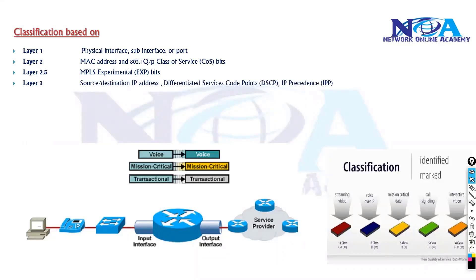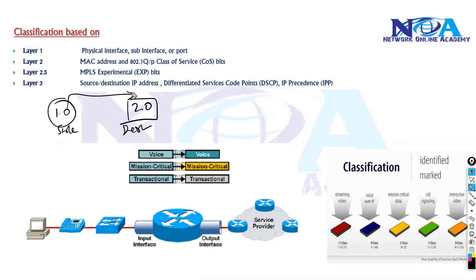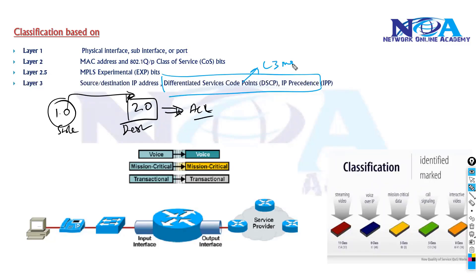Classification can also be based on layer 3 addresses — source or destination address, or a combination of both. For example, if traffic is coming from one network going to another, we can match based on source, destination, or both. We can also match traffic using an ACL, or based on layer 3 marking values like IP Precedence and DSCP — Differentiated Service Code Point.